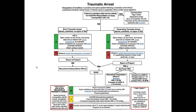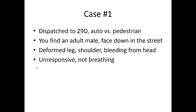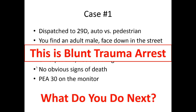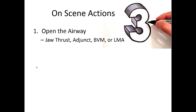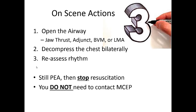Here's a look at our trauma arrest protocol — I'd encourage you to look through it. In the context of that protocol, let's go through the cases again. Case number one: the auto versus pedestrian, the guy lying in the street, unresponsive, not breathing, no obvious signs of death, PEA of 30. This is a blunt trauma arrest. We do our three things: open the airway with a jaw thrust or adjuncts, decompress the chest in case there's a tension pneumo, then reassess. If at the end of those efforts he's still in PEA and it's less than 30, we stop. There's nothing more anyone can do. You don't need to contact an MSEP — it's written in the guidelines that you can terminate this by yourself.